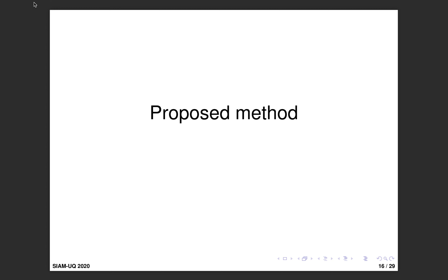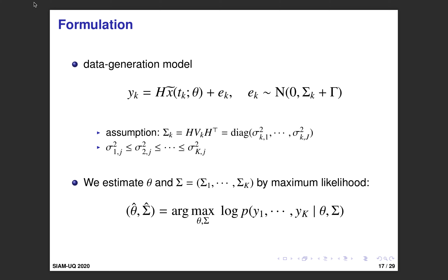Now we go to the proposed method. The data generation model is that y_k is related to the numerical solution x-tilde as described. We assume the discretization error variance is monotone increasing, giving an order constraint on the sigma-squared parameter. Under this order constraint, we estimate both theta and the discretization error variance sigma by maximum likelihood, maximizing the log likelihood with respect to theta and sigma.